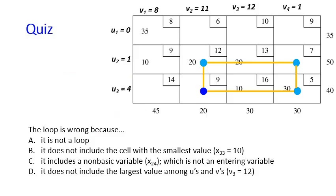So if this is the entering variable and then I create something like this, this loop is wrong. Pick one of the statements that is true. In the context of transportation simplex algorithm, this loop is wrong because it includes a non-basic variable. The only non-basic variable that you may include in the loop is the entering variable. For the other ones that you include in the loop must be basic variables. So that is the reason why this loop is wrong.